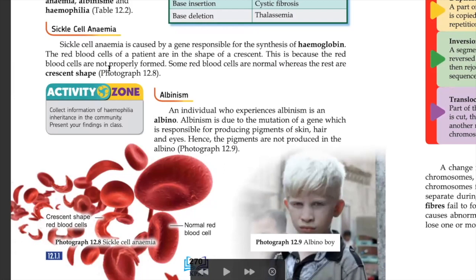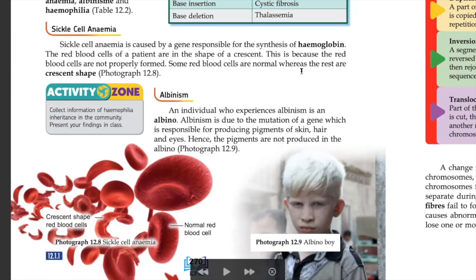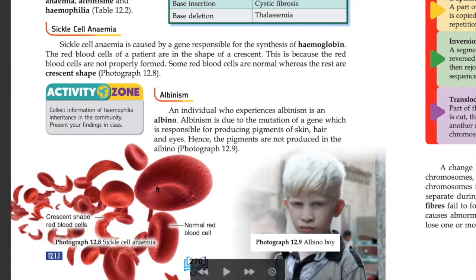The red blood cells are not formed properly because hemoglobin is not produced properly. We know that inside the red blood cell you can find hemoglobin — when hemoglobin changes, it changes the shape of the red blood cell. Some red blood cells are normal while the rest are crescent-shaped. The consequence is that the patient suffers from fatigue and becomes pale because the function of red blood cells — to transport oxygen — is reduced. When many red blood cells are crescent-shaped, oxygen transport decreases, causing fatigue.